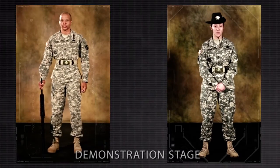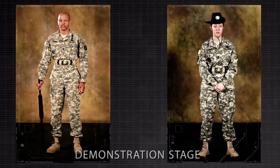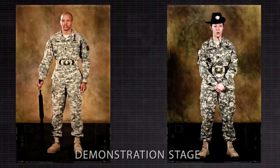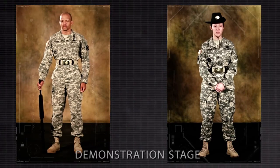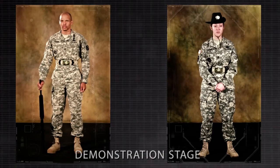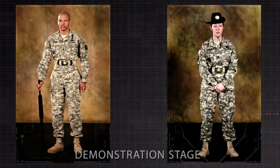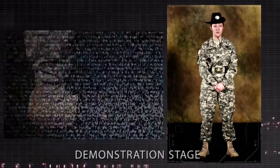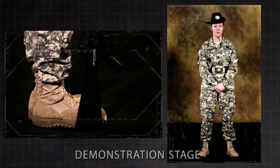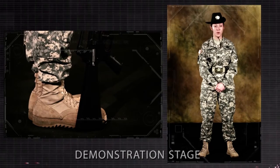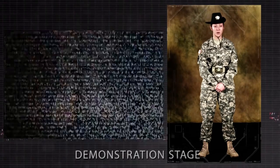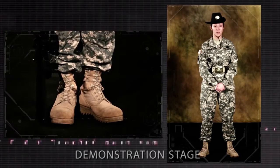I will use the Talk Through method of instruction. Assume Order Arms on the command Fall In, or from Parade Rest on the command of execution Attention. At Order Arms, maintain the position of attention. Place the butt of the rifle on the marching surface, centered on the right foot with the sights to the rear. The toe of the butt touches the foot so that the rear sight and pistol grip form a straight line to the front.